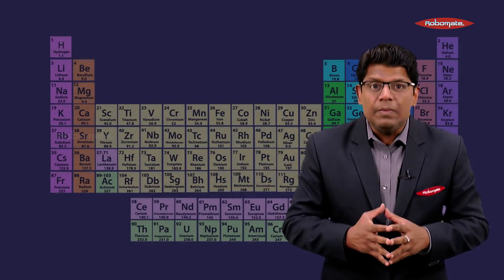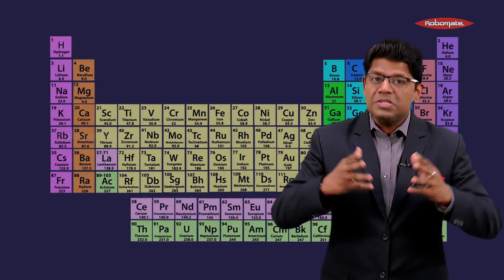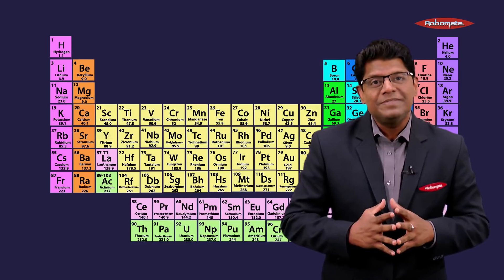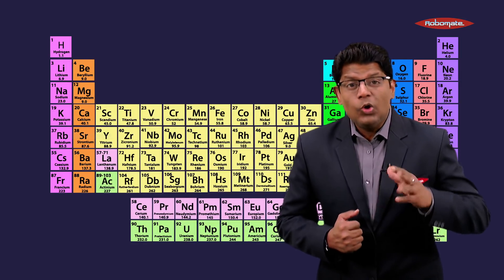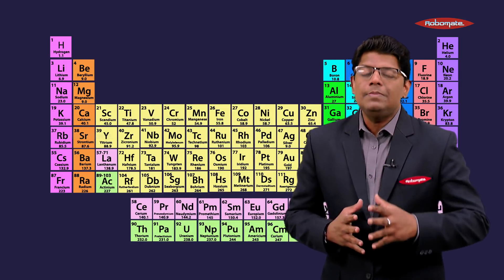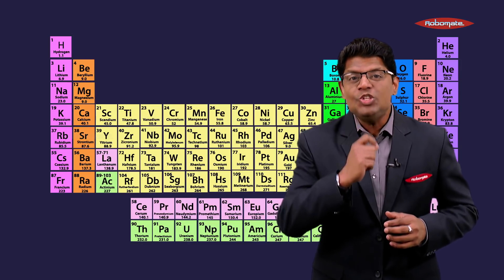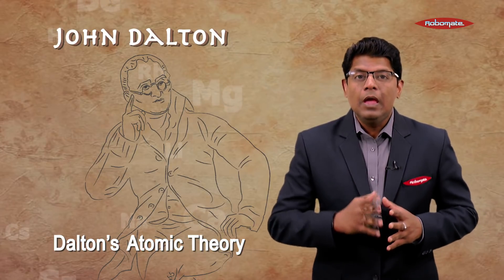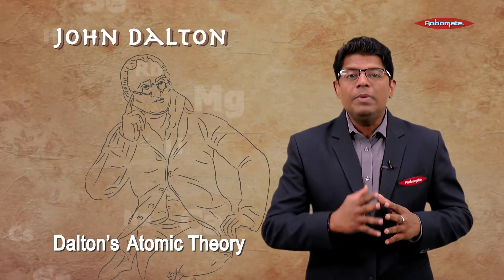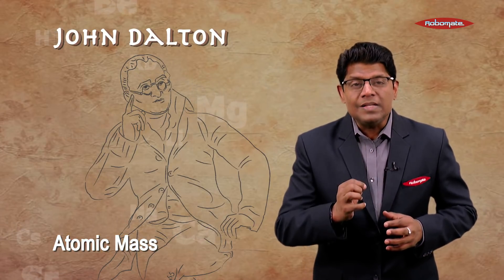Therefore, they felt the need to further classify the elements on the basis of some other properties. The biggest question was how to classify these elements. The answer came in 1808, when John Dalton gave his atomic theory, according to which atomic mass is the fundamental property of an element.